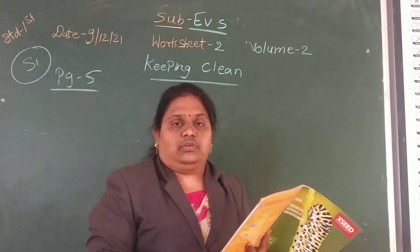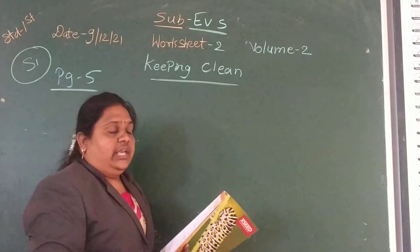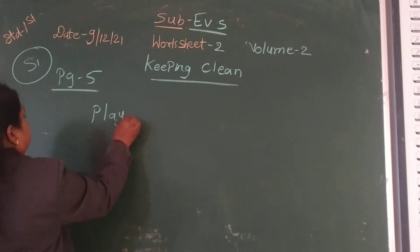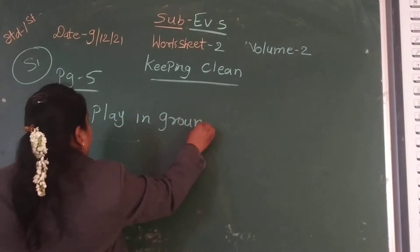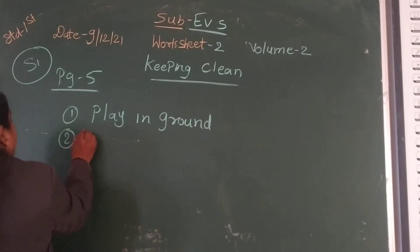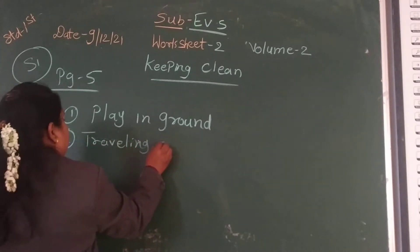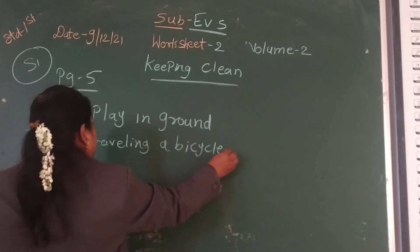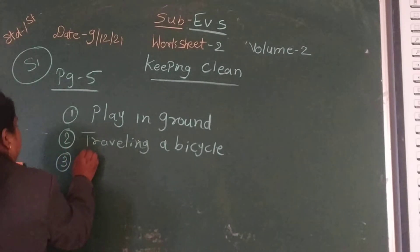How do germs enter our body? First, by playing in the ground. Second, travelling by bicycle.